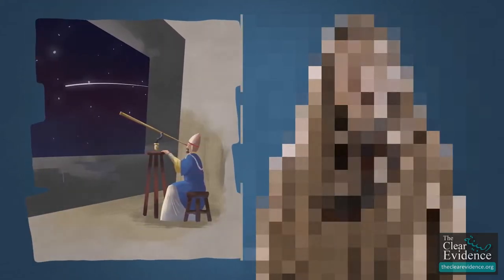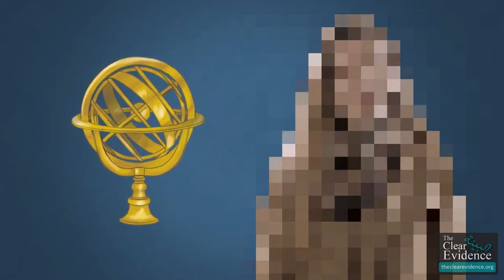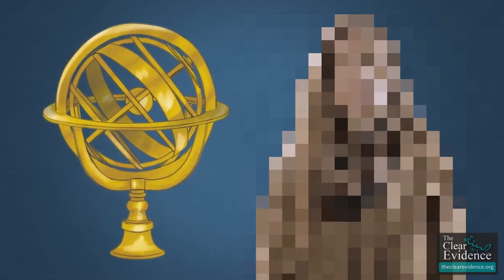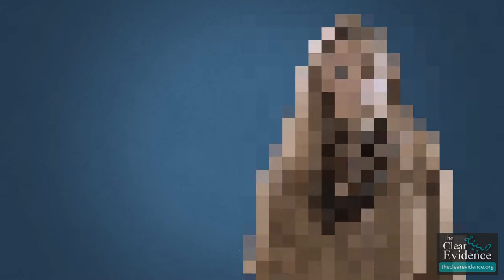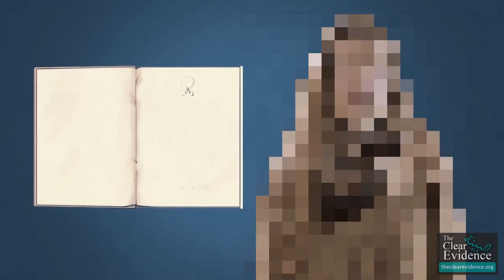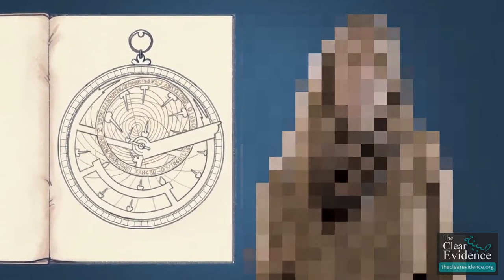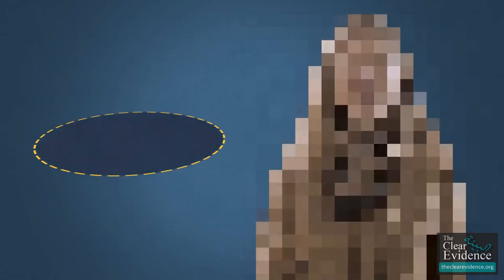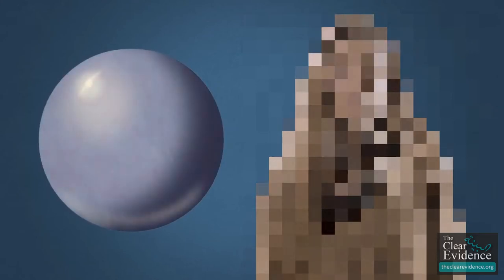Gerbert made sighting tubes to observe the stars and constructed globes on which their positions were recorded relative to lines of celestial longitude and latitude. He, or perhaps his best student, wrote a handbook on the astrolabe, an instrument for telling time and making measurements by the sun or stars. You could even use it to calculate the circumference of the earth, which Gerbert knew very well was not flat like a disk, but round like an apple.